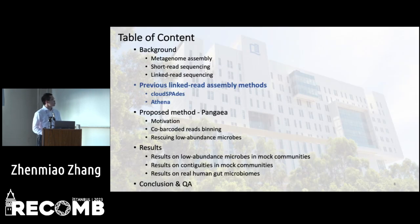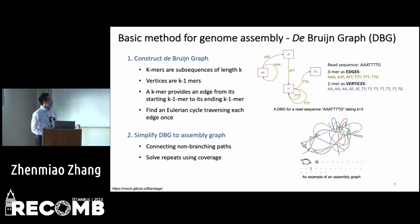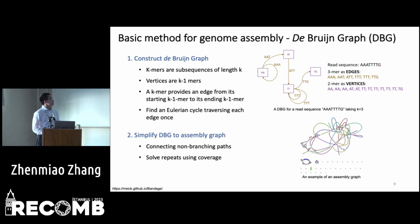In the next part, I will describe two previous linked-read assembly methods: CloudSPAdes and Acena. Before introducing the two linked-read assembly methods, I'd like to first describe the basic method for genome assembly, which is the de Bruijn graph approach.